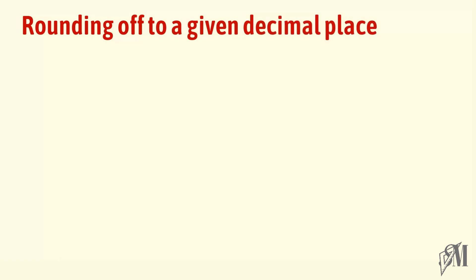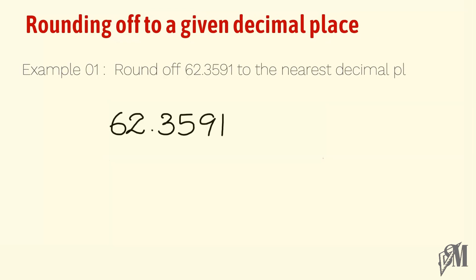There can also be questions asking you to round off to a given decimal place. Look at this example — 62.3591 is to be rounded off to the nearest second decimal place. Here we must pay attention to the digit at the third decimal place, which is 9. Since 9 is greater than 5, we add 1 to the digit in the second decimal place — that is, we add 1 to 5 — and the digits after the second decimal place are neglected. Our answer becomes 62.36.